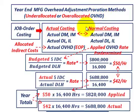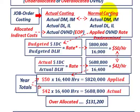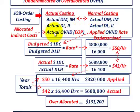For our job order costing for the year, we would have used normal costing, where for our overhead we would have had an applied overhead rate — a predetermined or budgeted overhead rate — that we used on these jobs. Now at the end of the year, we know our actual overhead cost, so we can calculate our actual overhead rate. We're going to have to make accounting adjustments between our actual overhead for the year versus what we budgeted or applied on those jobs.